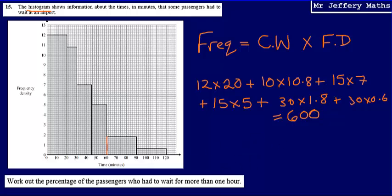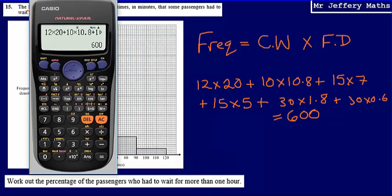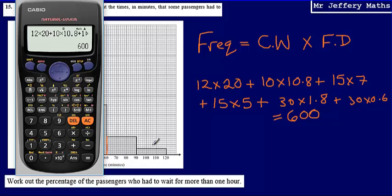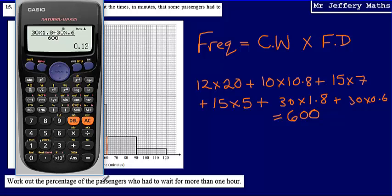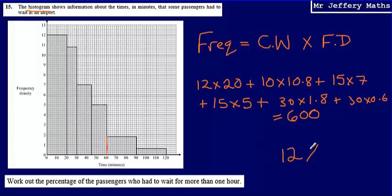The area of those two bars is 30 multiplied by 1.8 plus 30 multiplied by 0.6, divided by 600. Our proportion works out to 3 over 25. We're asked for the percentage, so we multiply by 100, giving us a final answer of 12 percent.